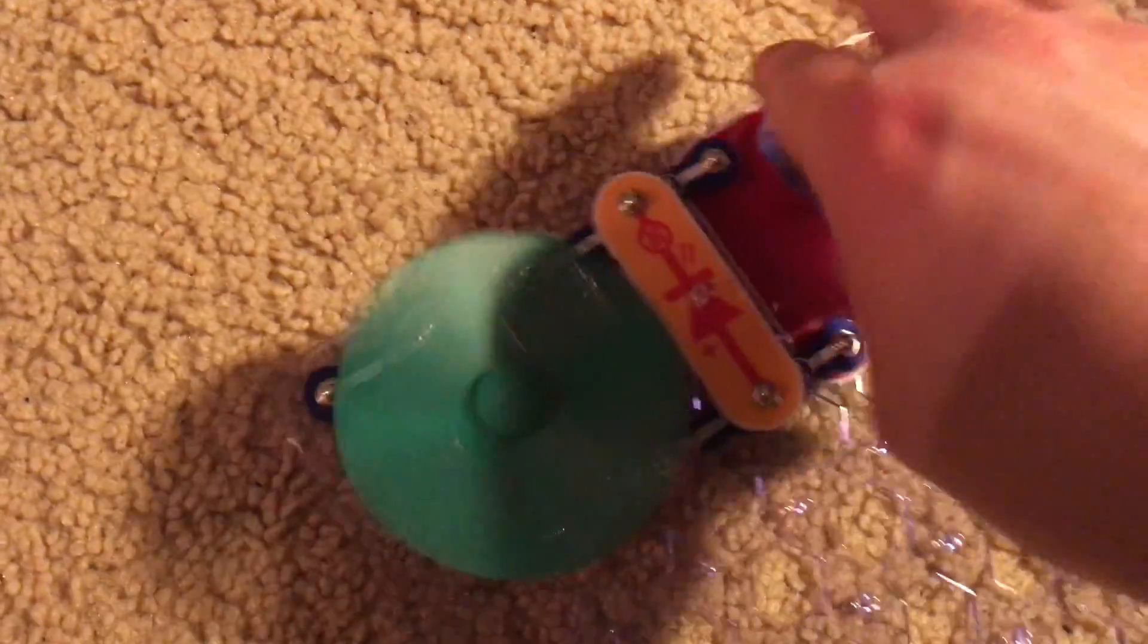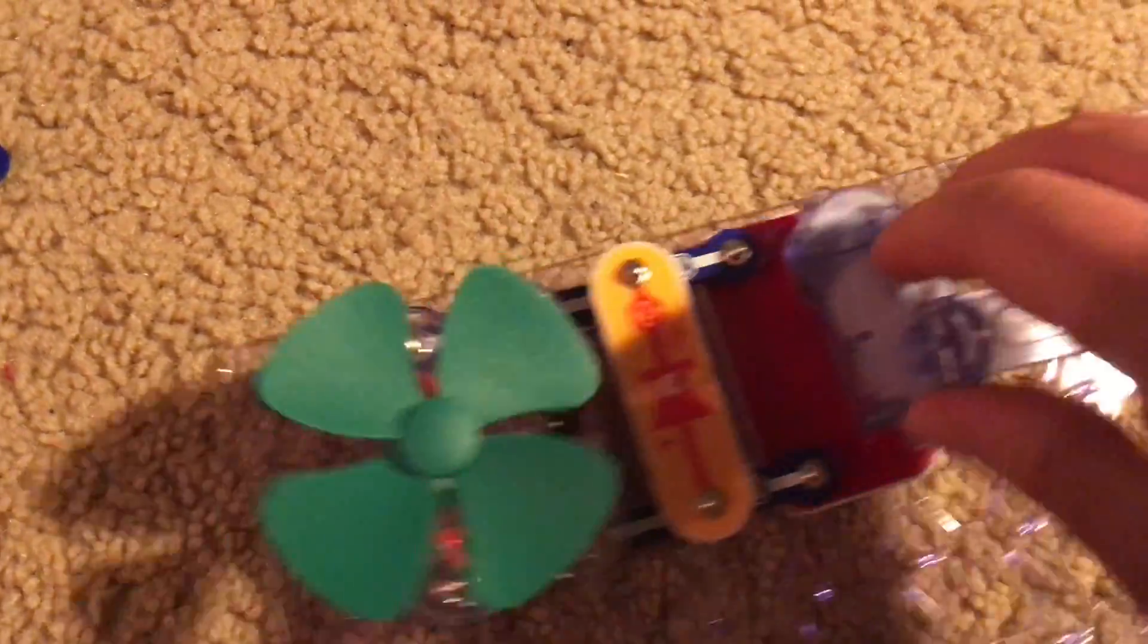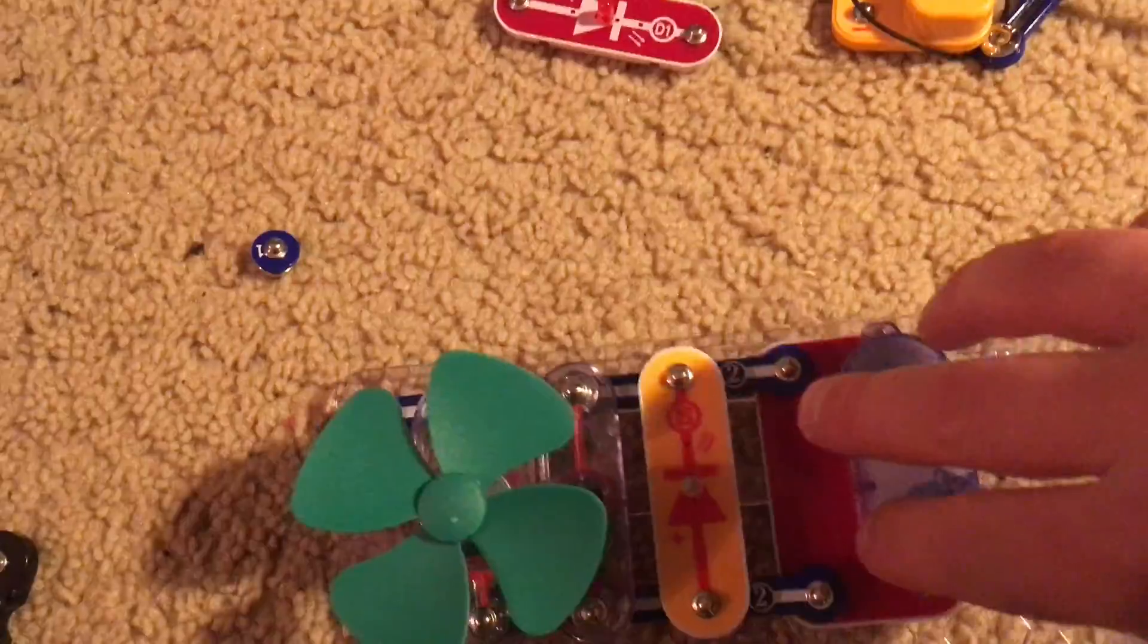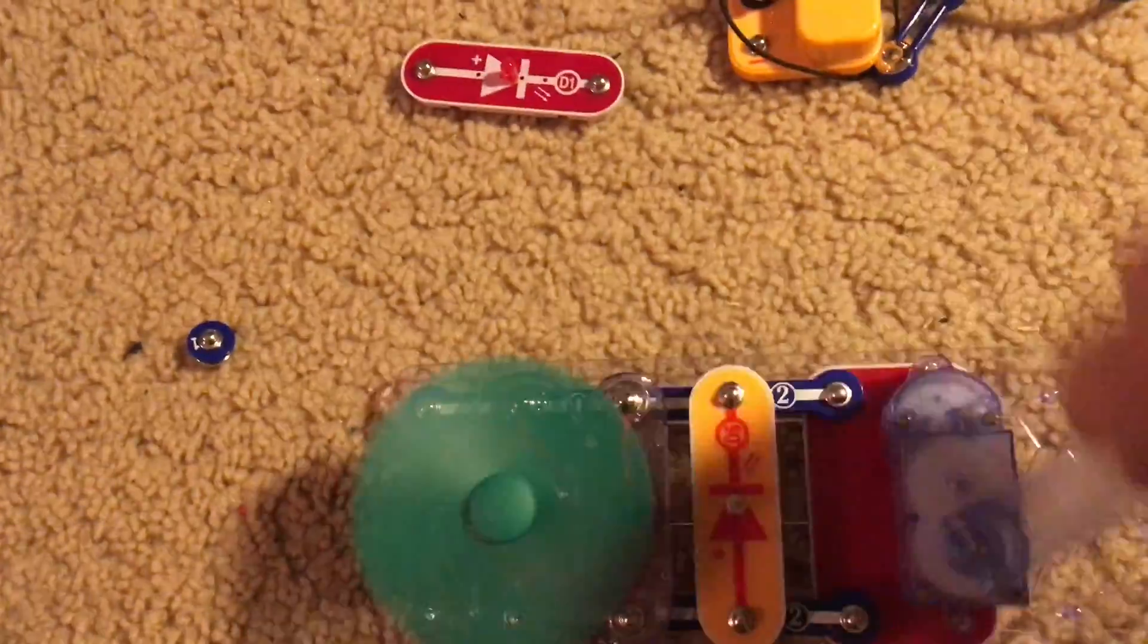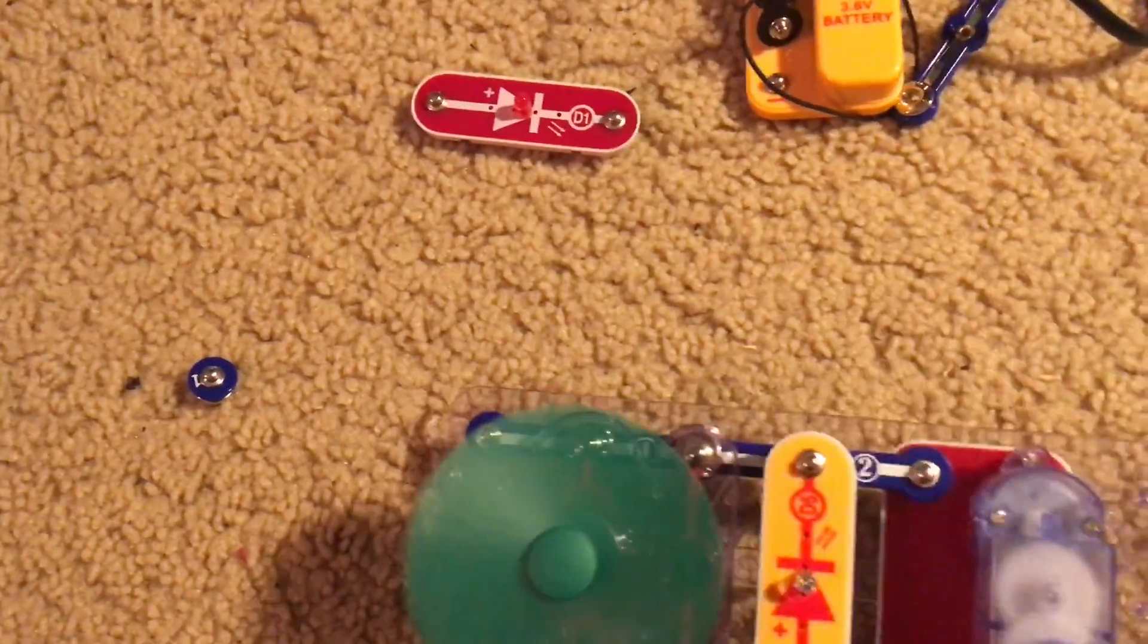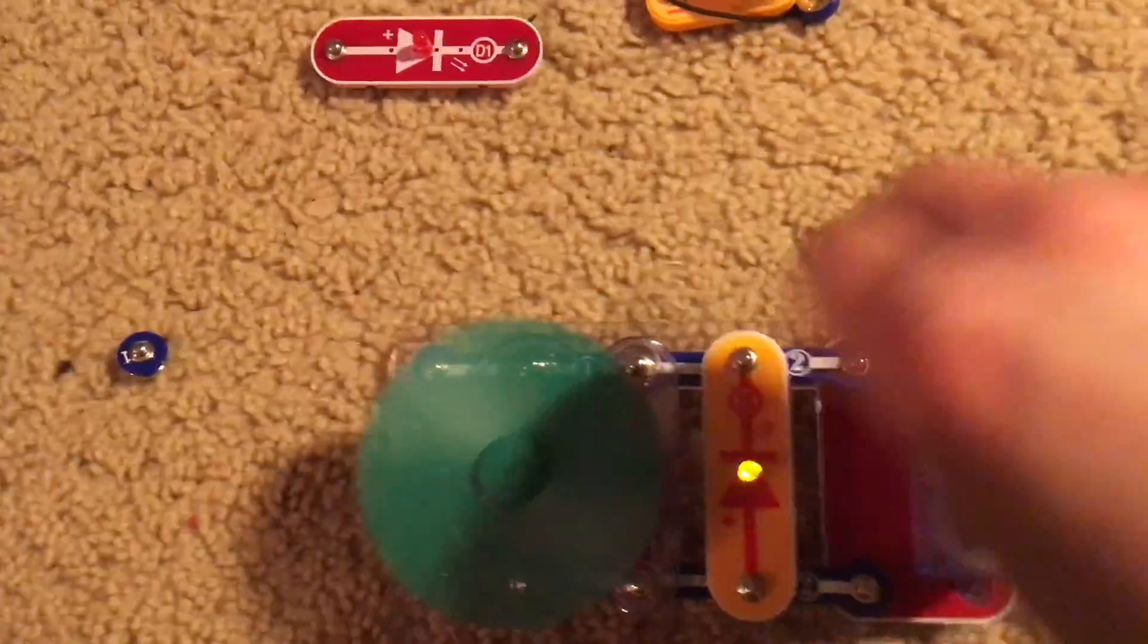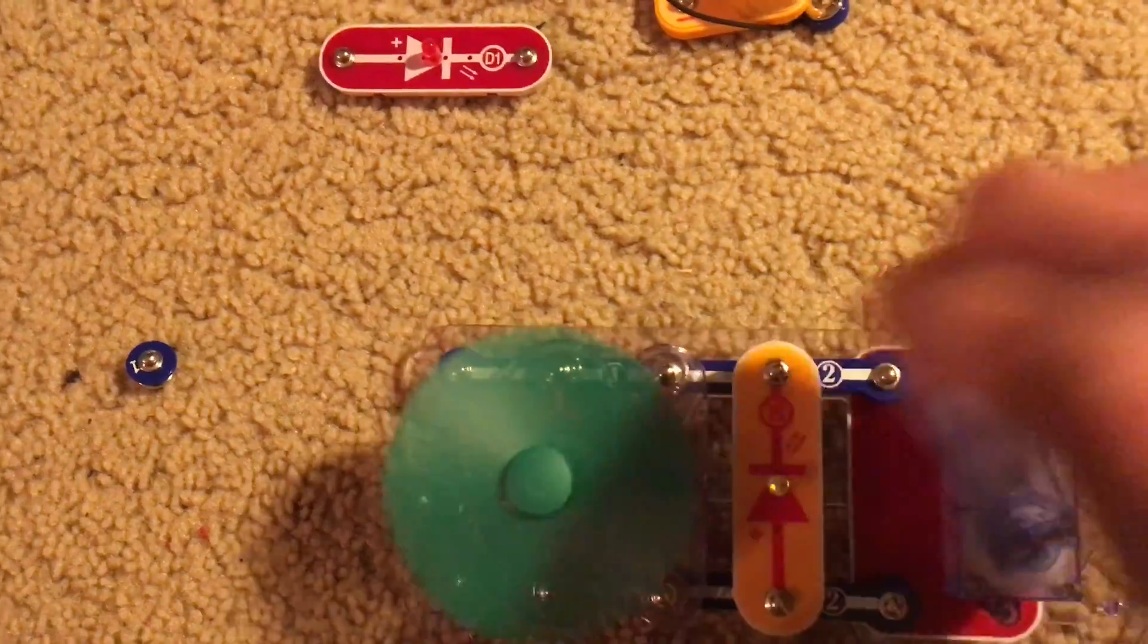As soon as I turn the crank the horn sounds and the fan on the motor spins. Now if I turn the crank super fast the yellow LED flickers and the horn gets louder while the fan spins faster.